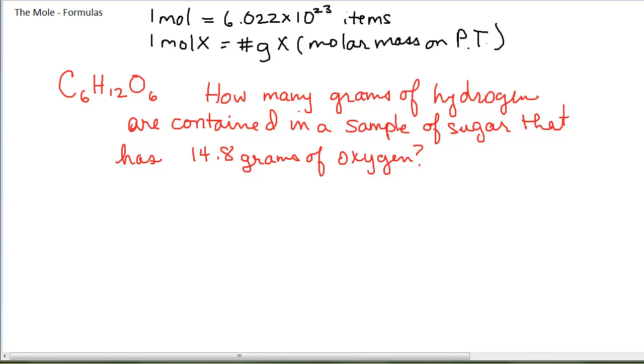Again, this may seem a little contrived, and it sort of is, but it does demonstrate the technique. I want to know how many grams of hydrogen are equal to 14.8 grams of oxygen. I'm using the elements here because I'm not talking about a sample of O2 or H2. I'm talking about the oxygen and hydrogen contained in this formula, the individual atoms that go to make up this formula.